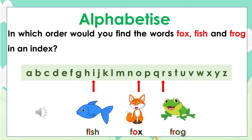Now let's look at another example. In which order would you find the words fox, fish, and frog in an index? As you can see, the first letter in all these words is the same, so we go with step number two and arrange by the second letter. We would find fish, fox, and frog in alphabetical order.